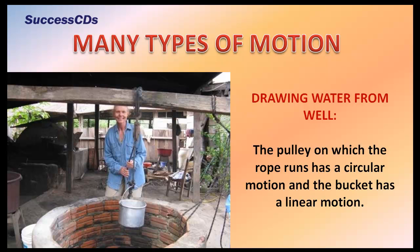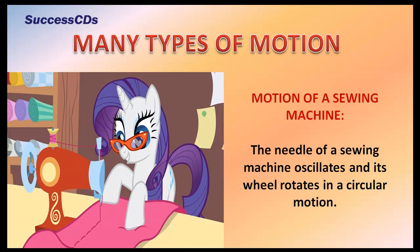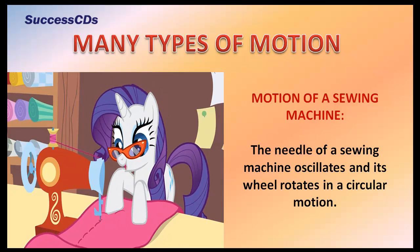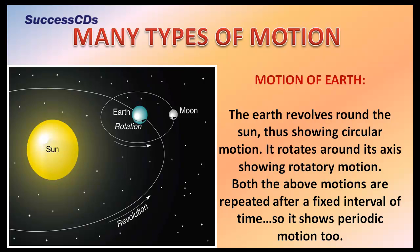In many objects, more than one type of motion is observed. For example, when drawing water from a well, the pulley on which the rope runs has circular motion, and the bucket has linear motion. The needle of a sewing machine oscillates, and its wheel rotates in a circular motion.